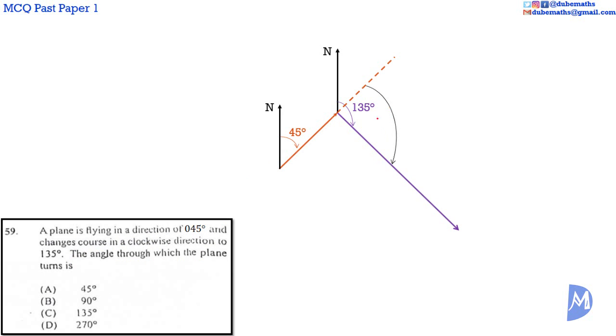So, this angle is the desired angle. The plane was traveling on a bearing of 45 degrees and it turned in a clockwise direction. And it's now going at a bearing of 135 degrees. We are asked to find the angle through which the plane turns. This angle here is 45 degrees.